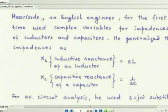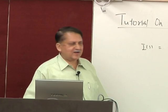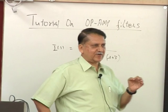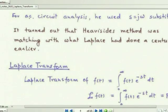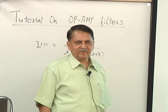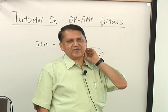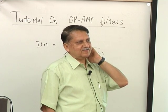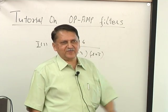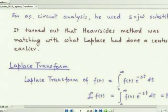Heaviside, an English engineer, first used complex variables for impedances of inductors and capacitors. He generalized impedance: the inductive reactance of an inductor is S·L and the capacitive reactance of a capacitor is 1/(SC). He also said that if you have an AC circuit with a single-frequency source, you can substitute S = jω and everything is fine. The concept of phase and magnitude became very easy with S = jω.